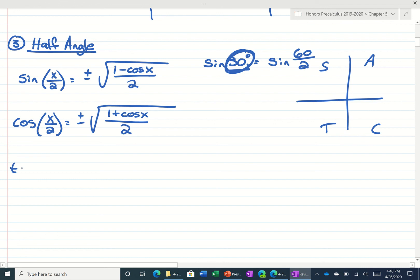And then for the tangent of x over 2, that's equal to plus or minus 1 minus the cosine of x over 1 plus the cosine of x.